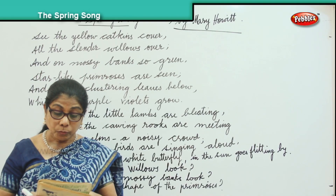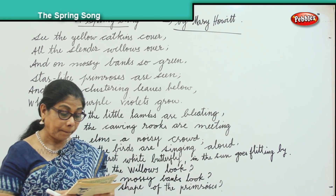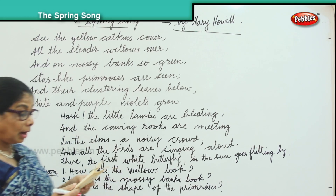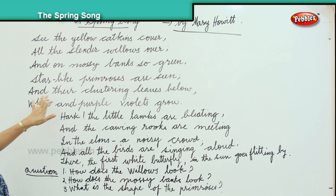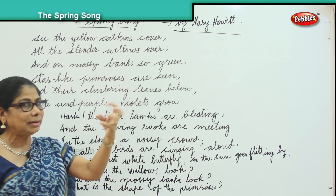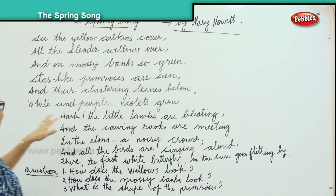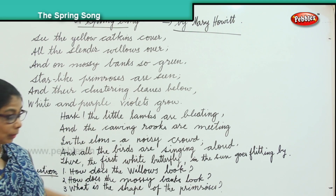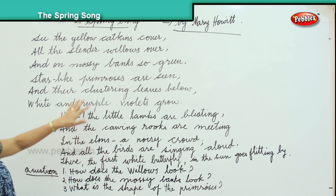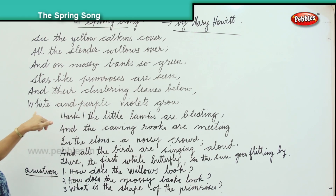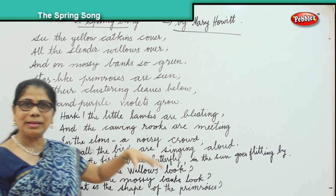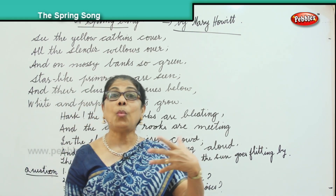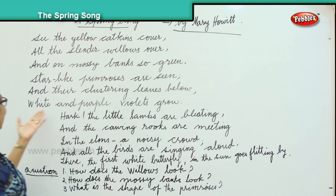What are the colours of the leaves? The primroses are seen and they are clustering — they are all in groups seen below — they are white and purple. My question is, what are the colours of the leaves? The leaves are white, purple and violet. They are violet, purple and white.